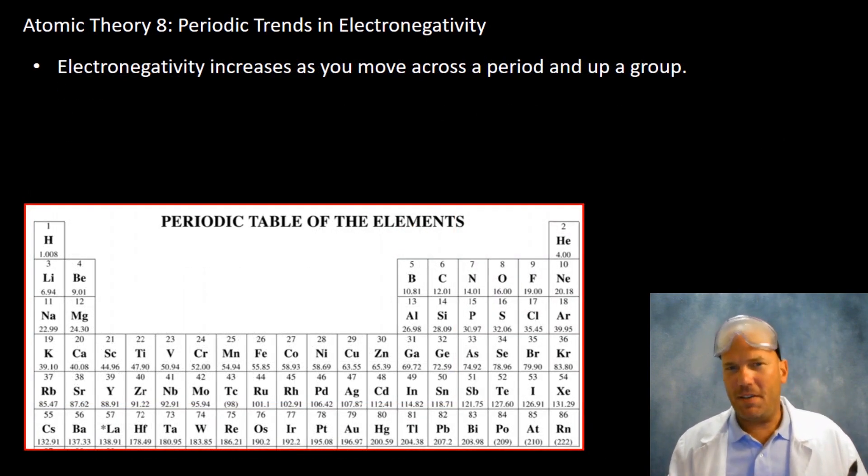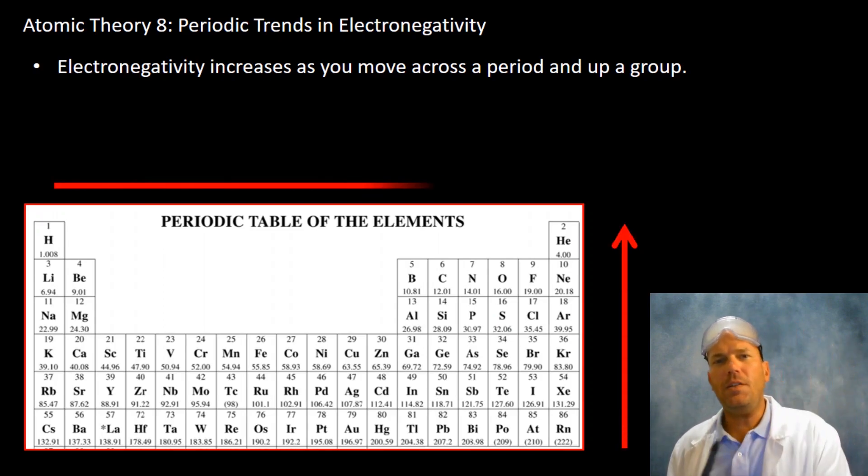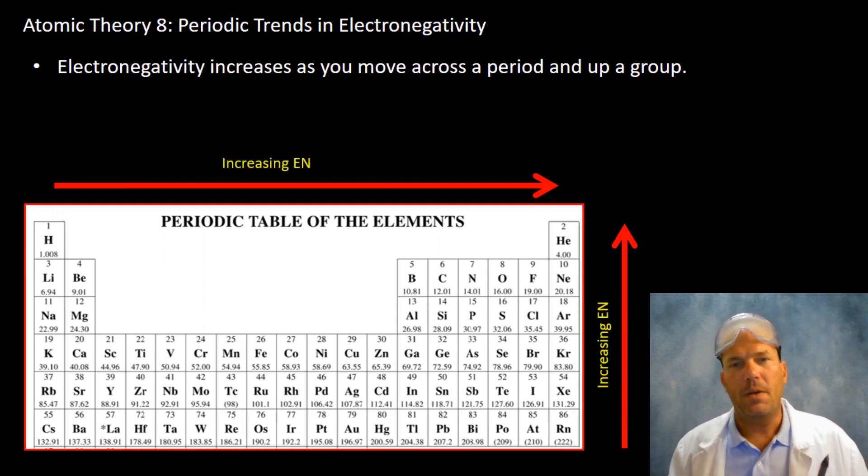The electronegativity will increase as you move across the period and up a group. So that is the periodic trend that is the topic of this video: increasing electronegativities from left to right and from the bottom of a group or family to the top.